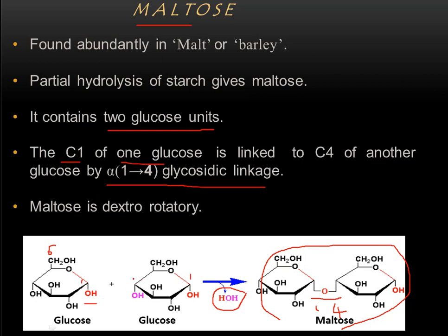The C1 carbon of one glucose and the C4 carbon of another glucose are involved. The functional group of the left-side glucose is involved in the glycosidic linkage, whereas the functional group of the right-side glucose is not involved — it is freely available. Because one functional group is free, maltose is a reducing sugar. Maltose is also dextrorotatory — it rotates plane polarized light towards the right side.